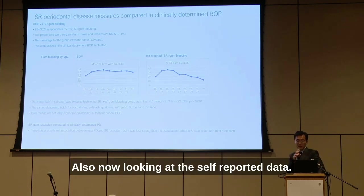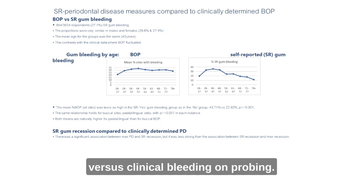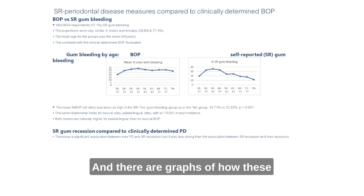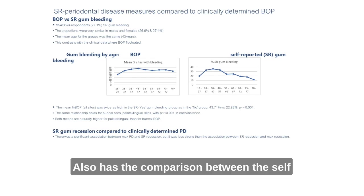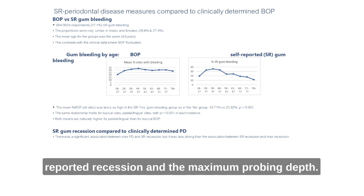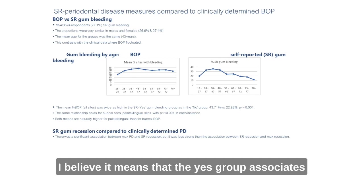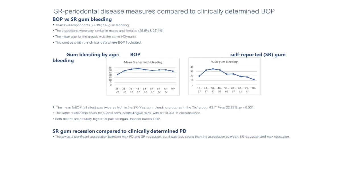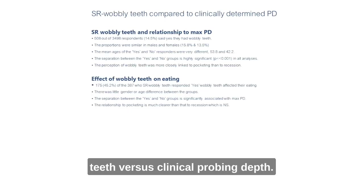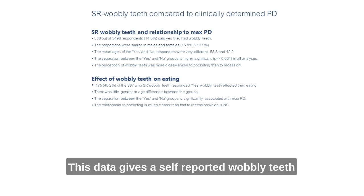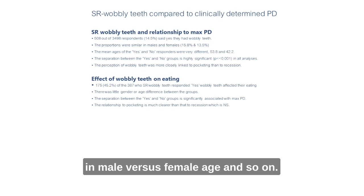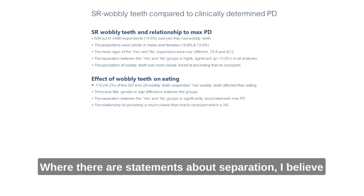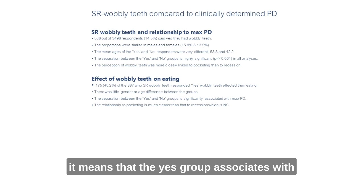Looking at self-reported data: this slide compares clinically determined bleeding on probing with self-reported gum bleeding, with graphs showing how these compare across different age groups. It also includes a comparison between self-reported recession and maximum probing depth. Where statements refer to separation, this means the 'yes' group associates with higher mean percentages of bleeding on probing or higher maximum probing depth values. Finally, self-reported wobbly teeth is compared against clinical probing depth by male versus female and age, again with statements about separation indicating the 'yes' group associates with higher maximum probing depth values.